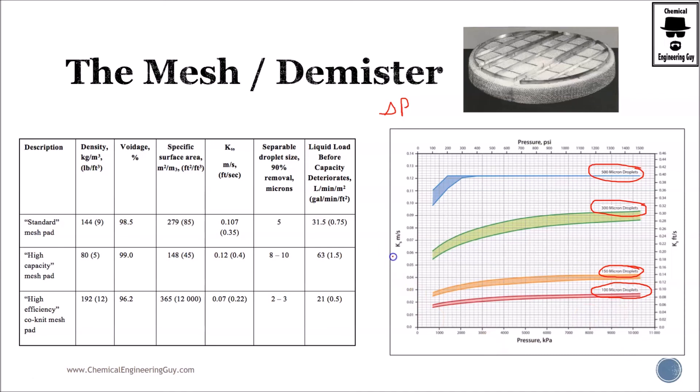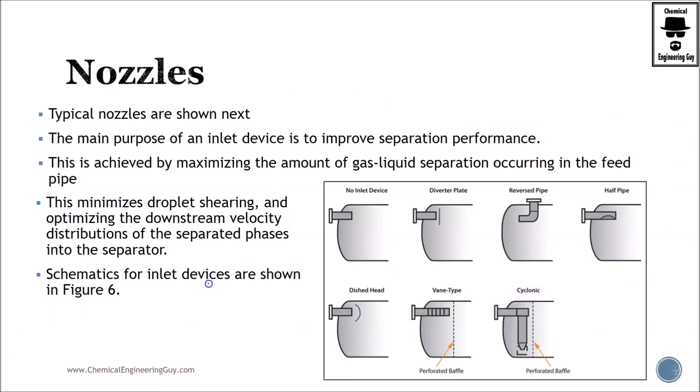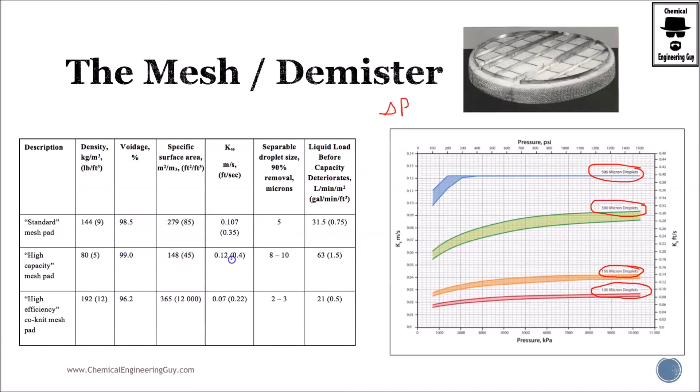These are the mesh and the demisters—very important because they allow the vapor to go upwards, and the liquid will eventually form on these little parts and start dropping.